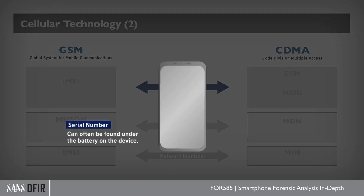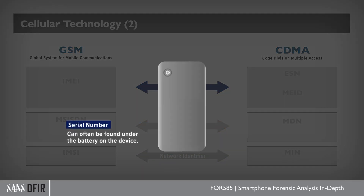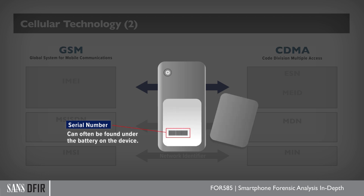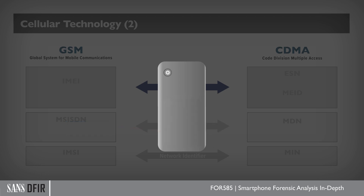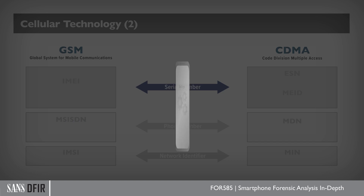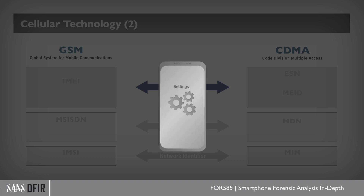Let's start with the serial number. The serial number for GSM and CDMA can often be found under the battery on the device, but you're going to come across some devices where you can't remove the battery, so you may have to find this in the settings.